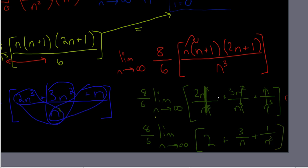Now you take the limit. As n goes to infinity, this is unaffected. 3 over infinity, 3 over a huge number, goes to 0, so this goes to 0. 1 over huge number squared is 0. So you get 8 over 6 and then 2 plus 0 plus 0, so you get 8 over 6 times 2. So then you get 16 over 6 equals 8 thirds